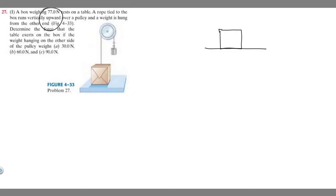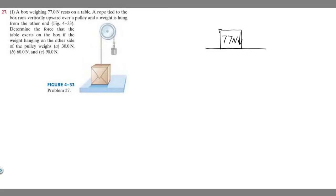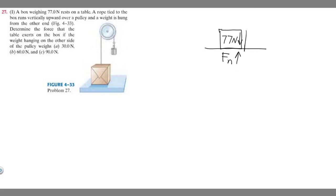We know the box weighs 77 newtons, so there's going to be a 77-newton force pushing toward the ground because of its weight. By Newton's third law, for every action there's an equal and opposite reaction, so the table exerts a normal force upward on the box — we call it F sub n. This normal force acts upward to balance the downward weight so the box doesn't move.